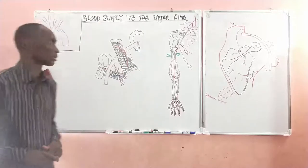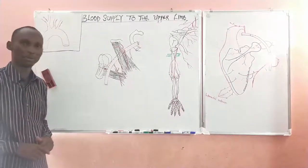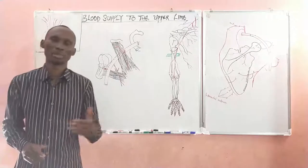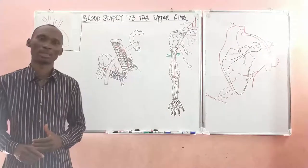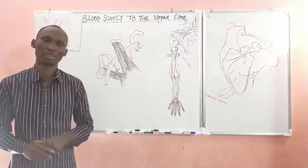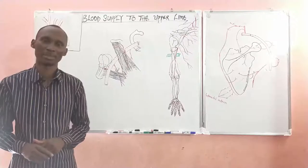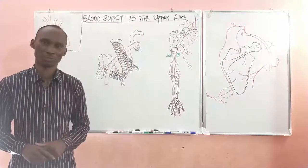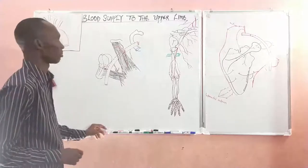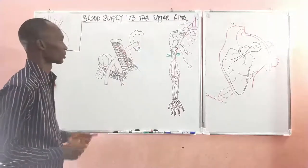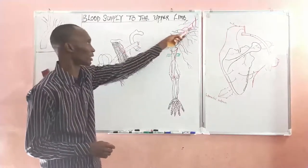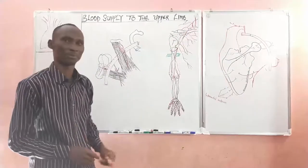In the arterial supply to the upper limb, we'll be seeing one vessel that keeps moving to the various parts of the upper limb, and at each point the names keep changing.